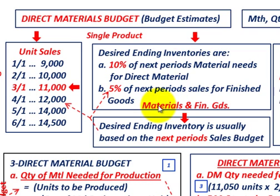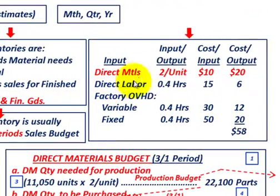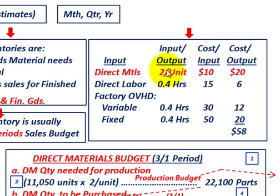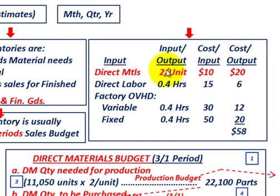We have to determine desired ending inventory for both materials and finished goods based on the next period's sales budget — that's why we need April and May figures. For our direct materials input, we're looking at one unit that requires two different parts. In real scenarios there can be hundreds of parts per product, but for our example we have just two parts per unit at a cost of $10 per part, giving a total cost of $20 per unit.